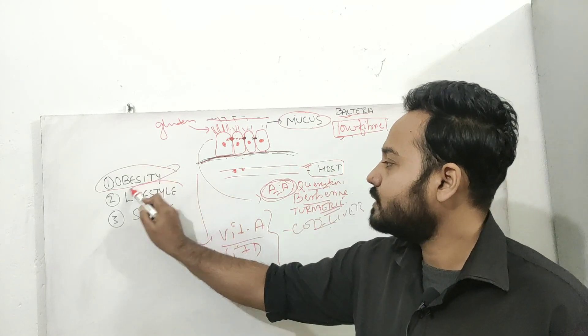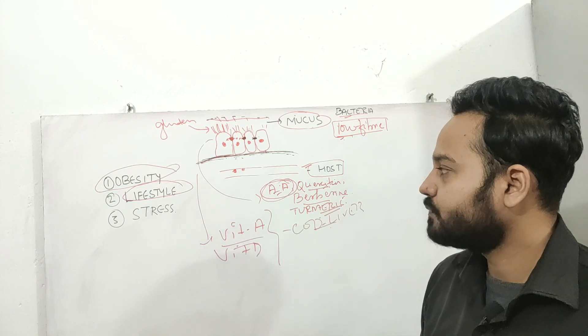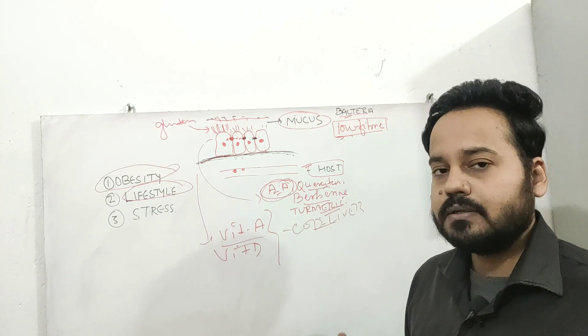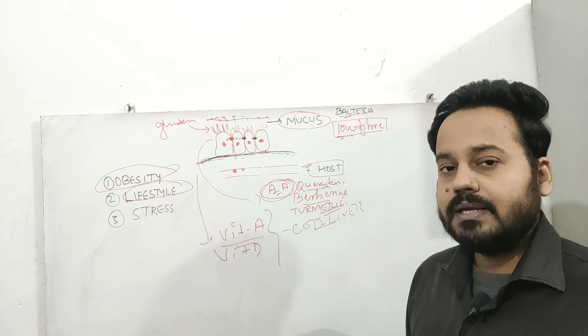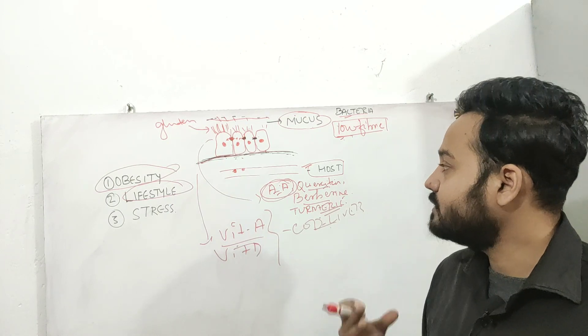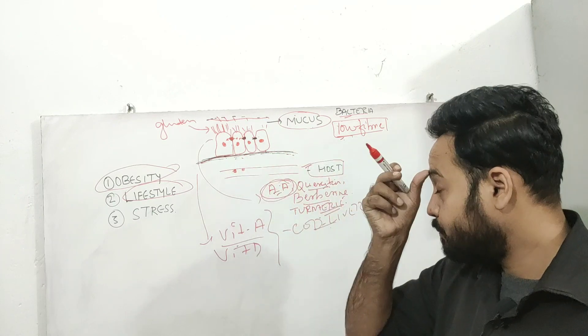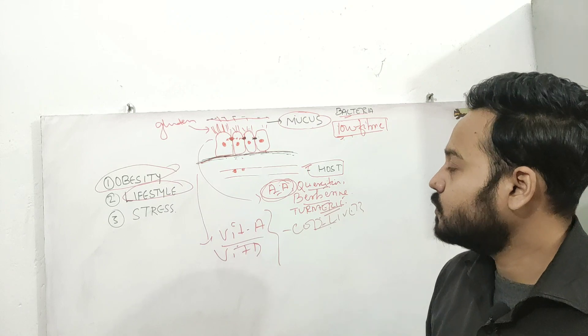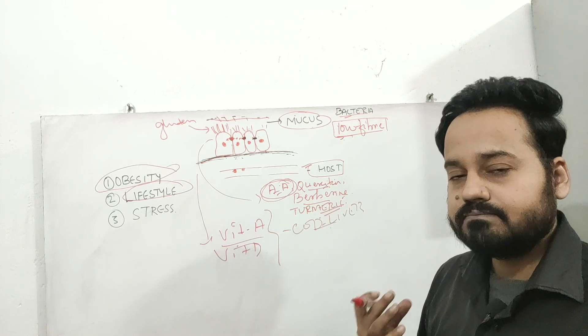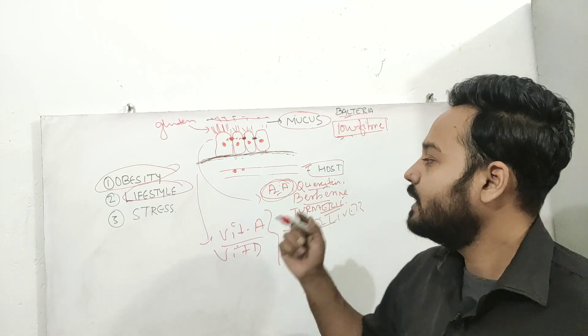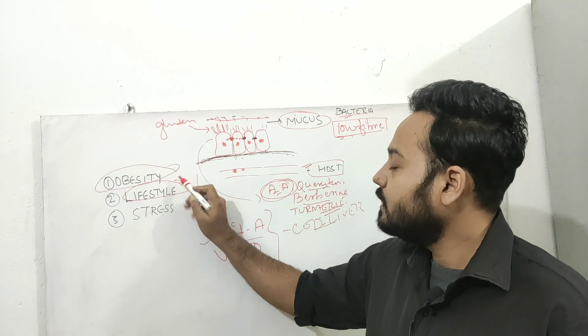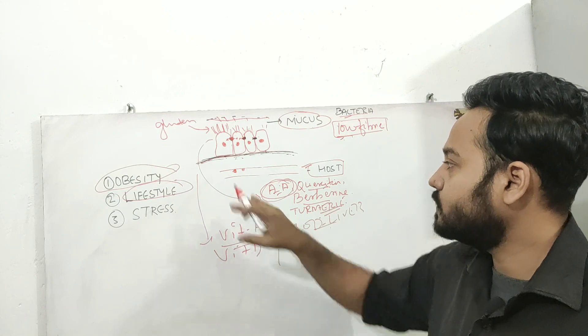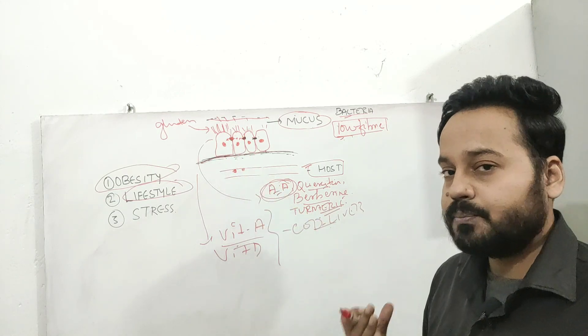Then second important thing is lifestyle. So a diet which is high in sugar, processed food, junk food, unhealthy fat, unhealthy oils, all these can cause increased intestinal permeability, thereby predisposing you to get autoimmune disorders. So you have to avoid eating such foods, processed food. Then avoid alcohol, smoking. These are also bad for your intestine because they increase the intestinal permeability.